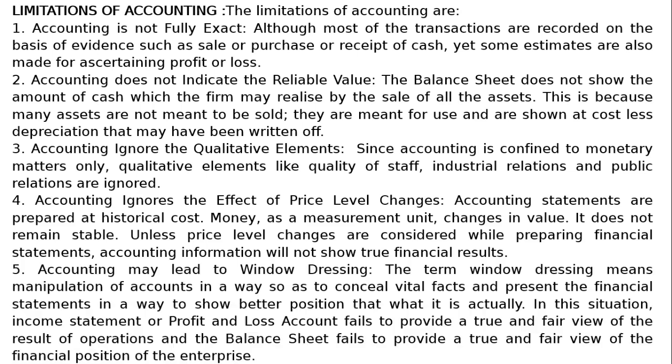The fifth and last limitation is accounting may lead to window dressing. Window dressing means manipulation of accounts in a way so as to conceal vital facts and present the financial statements to show a better position than what is actually the case. In this situation, the income statement or profit and loss account fails to provide a true and fair view of the results of operations, and the balance sheet fails to provide a true and fair view of the financial position of the enterprise.